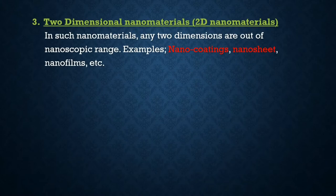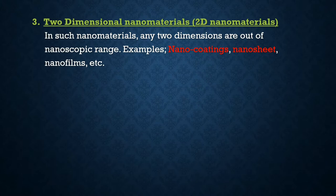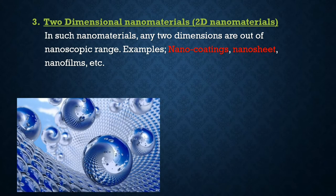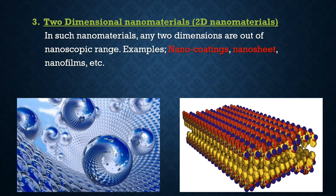The third classification is two-dimensional (2D) nanomaterials. In such materials, any two dimensions are out of nanoscopic range. Examples include nano coatings, nano sheets, and nano films. Think of it like a paper: its length and breadth are very long but its thickness is very small. Similarly, nano coatings and nano sheets have length and breadth more than 100 nanometers, but their height is less than 100 nanometers.